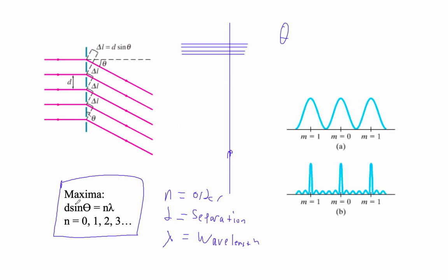When we solve for theta, the wavelength is just sine inverse of n lambda over d. So d doesn't change, this is the order of it. So the bigger the wavelength, the bigger the angle you get.